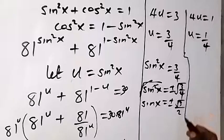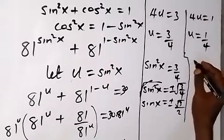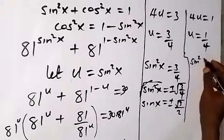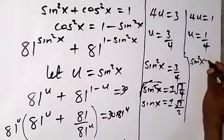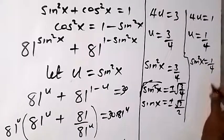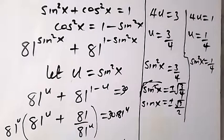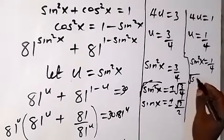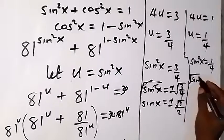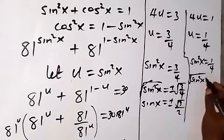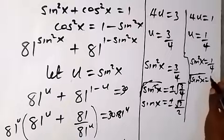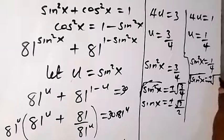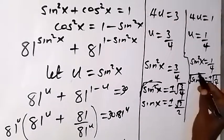From sin²x equals 1/4, taking the square root on both sides gives sin x equals plus or minus √(1/4), which equals plus or minus 1/2.